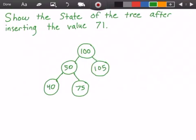Let's get started with the problem in this video where we want to show the state of the AVL tree after inserting the value 71. Down below here I have the AVL tree, which is currently balanced.